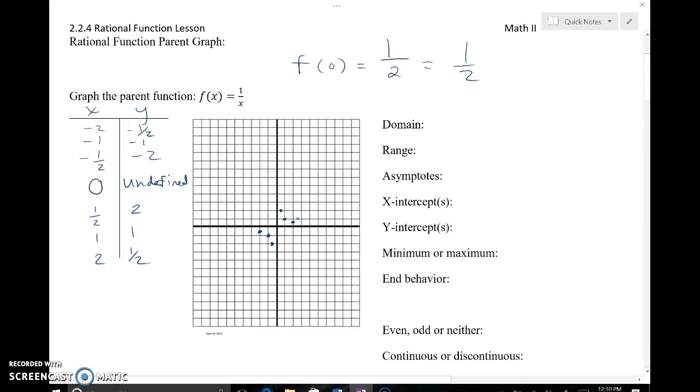You can start to see these curves occurring. What I want to do is extend this table and try negative 3 and positive 3 to give us even more of a picture. If I plug in negative 3, I'll get negative 1 third or negative 0.333 repeating, and that's going to be closer to the x axis. If I plug in a positive 3, I'll get a positive 1 third, which is also going to be close to the x axis as I move to the right.